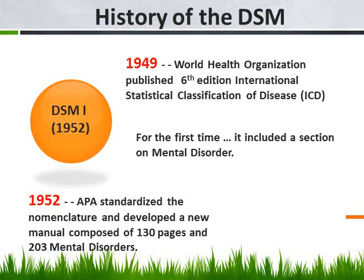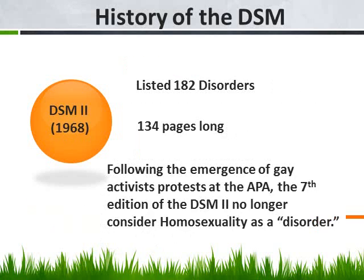The DSM actually started around 1952 when the APA decided they wanted to standardize this nomenclature so everybody would understand. The DSM-1 was 130 pages long, listing 203 mental disorders. It was an important tool for psychologists, psychiatrists, and any clinician to ensure they were all speaking exactly the same language. It was published shortly after World War II.